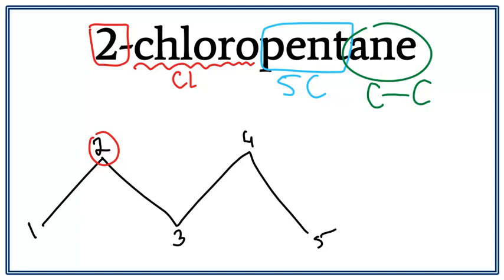Let's get rid of these numbers and let's attach the chlorine on the second carbon. So, this is the structure for 2-chloropentane.